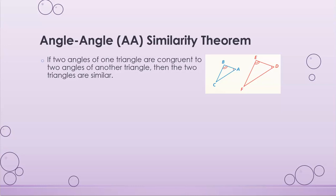Here is my similarity statement. If angle A is congruent to angle D and angle B is congruent to angle E, then triangle ABC is similar to triangle DEF. I use the squiggly line by itself to say it's similar.